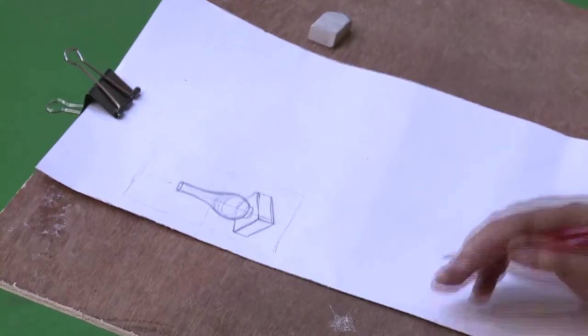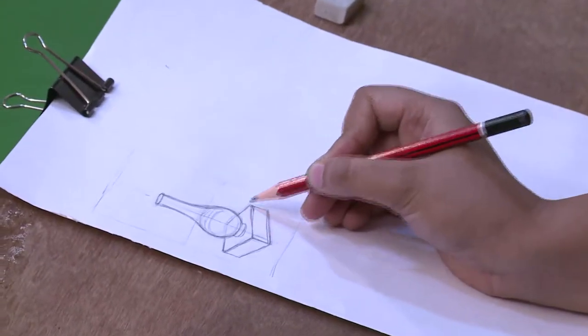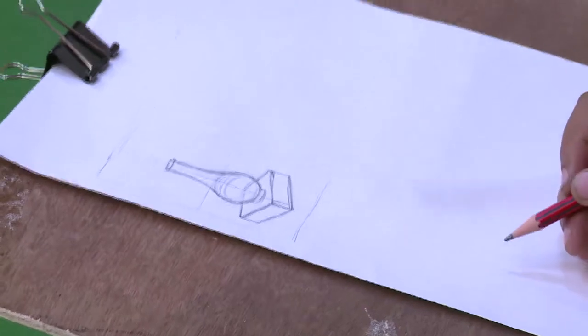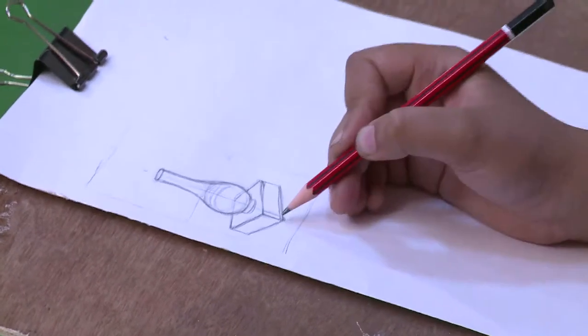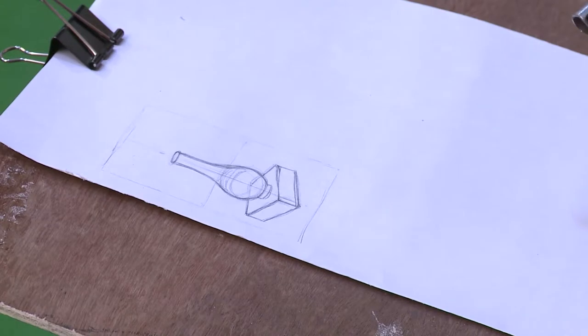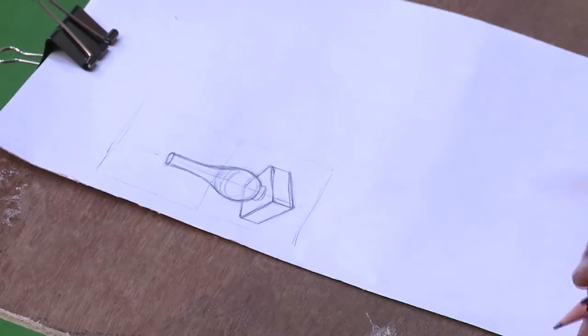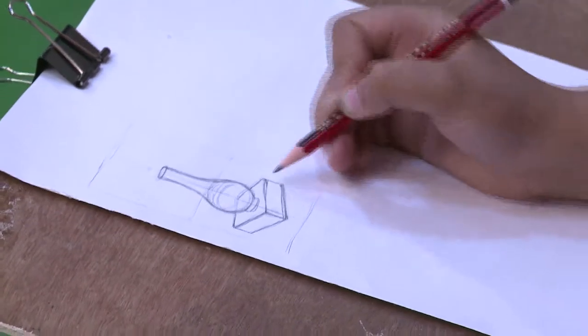The perspective is more important when you're drawing a square thing or a book. When we are going to the main drawing then I will explain how to use the perspective of a book.